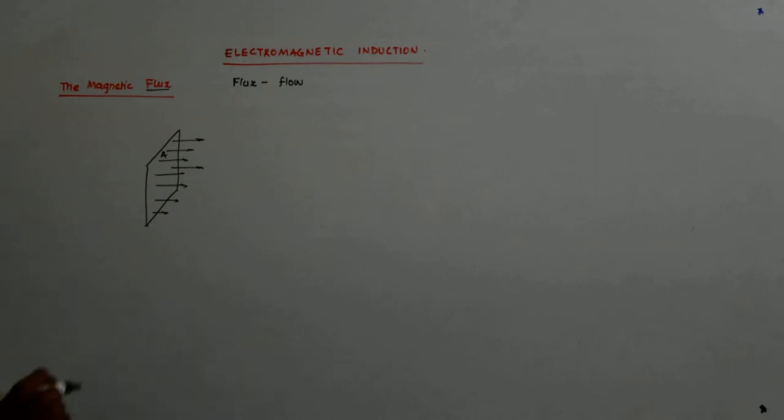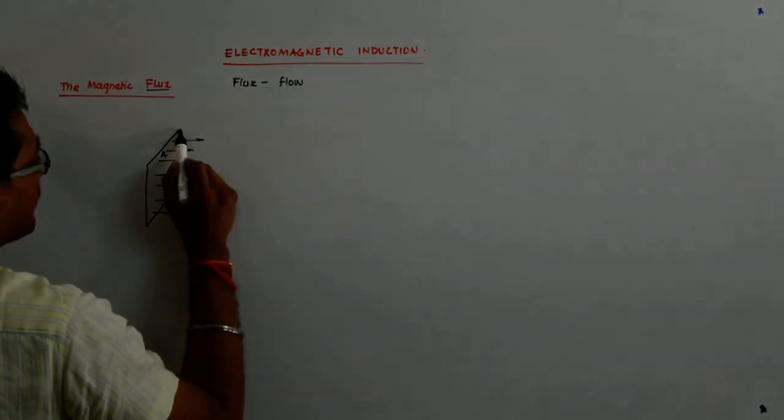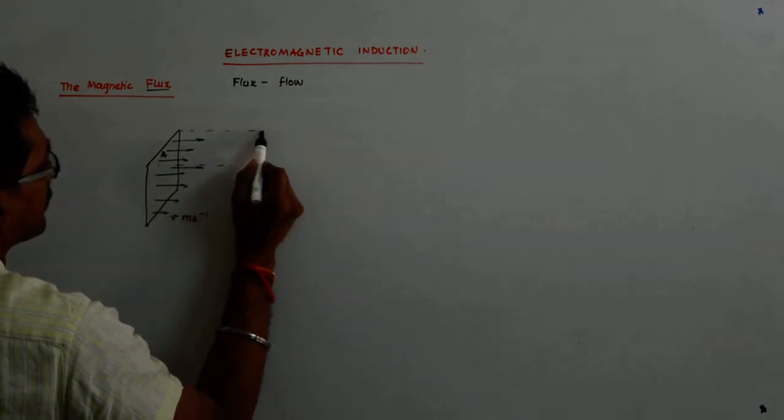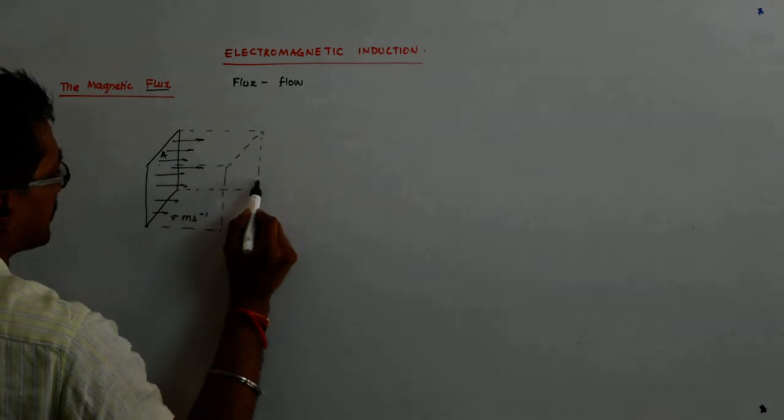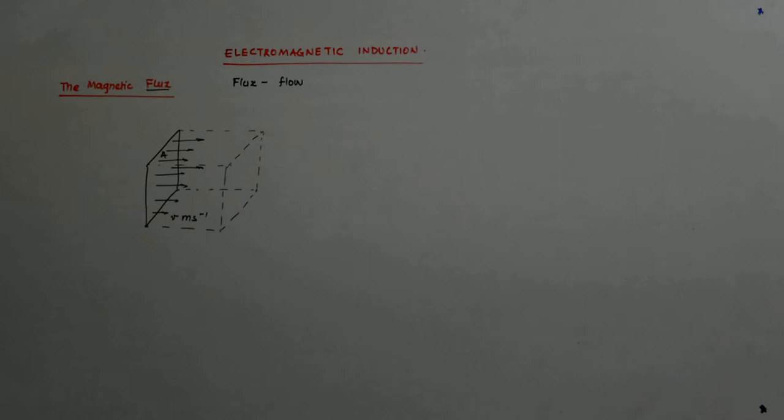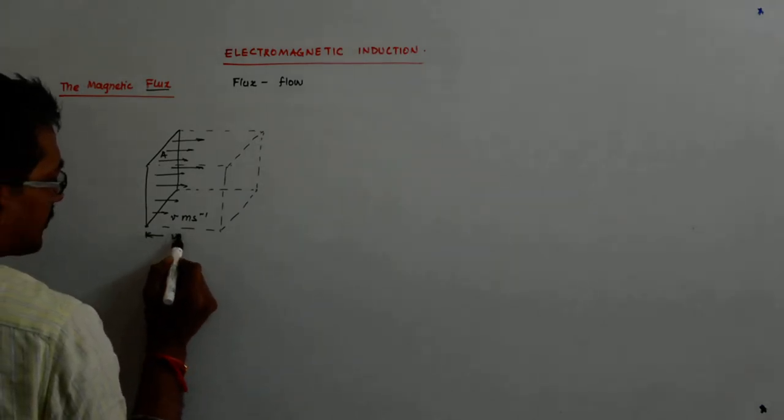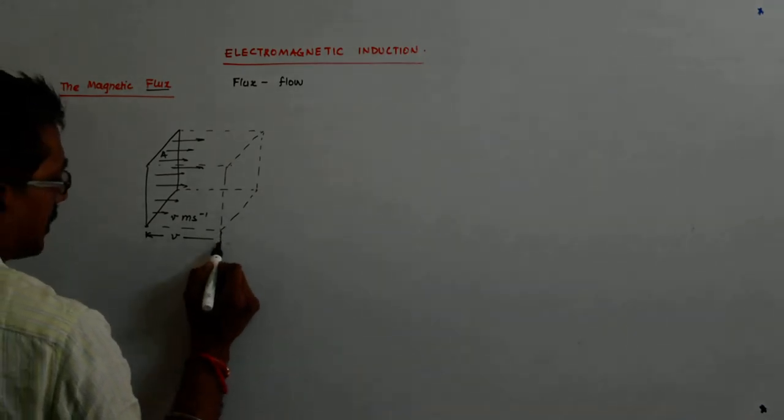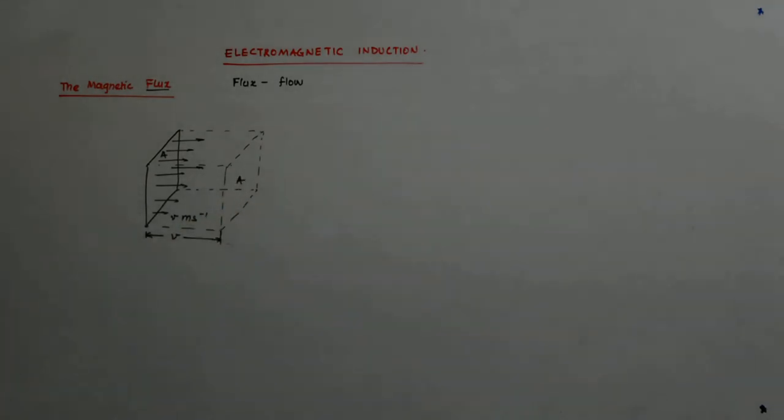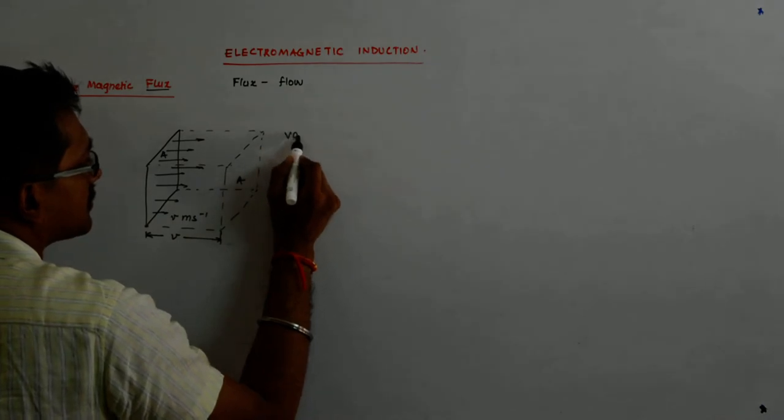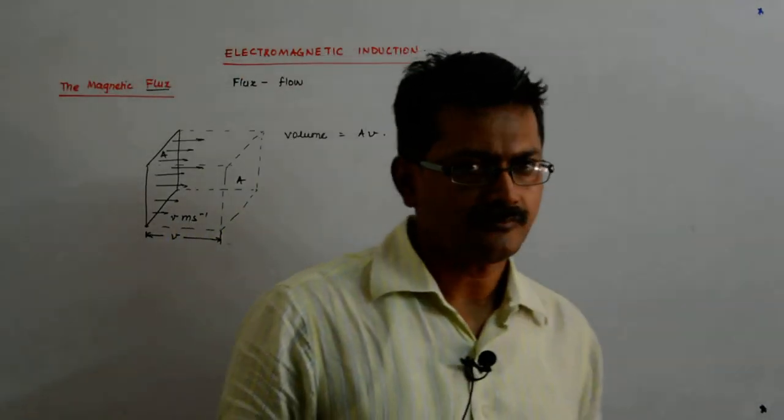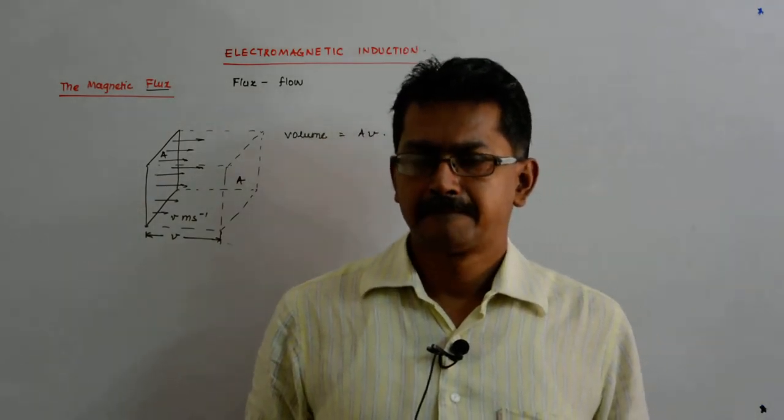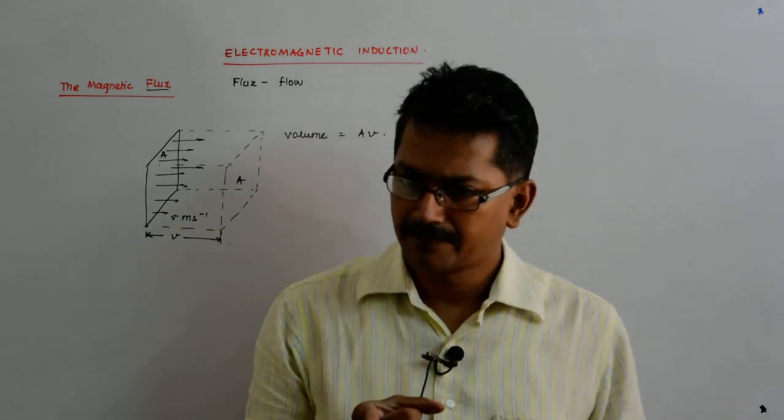How much water will flow if the water is flowing with velocity V meter per second and A is the area? In one second, if you consider it to be frozen ice flowing of the same density, a cuboid of length V comes out in one second. A cuboid of length V and area of cross section A comes out in one second. What is the volume of it? Volume is A into V. Always remember this fact.